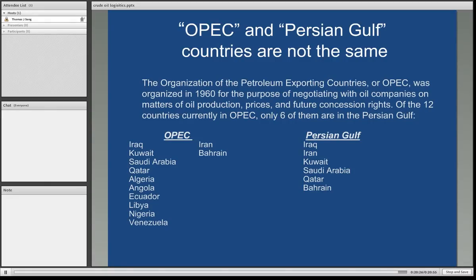On a final note, we talk about OPEC — the Organization of Petroleum Exporting Countries. OPEC was organized in 1960 for the purpose of negotiating with oil companies on matters of oil production, prices, and future concession rights. Of the 12 countries currently in OPEC, only six of them are in what we know as the Persian Gulf region.